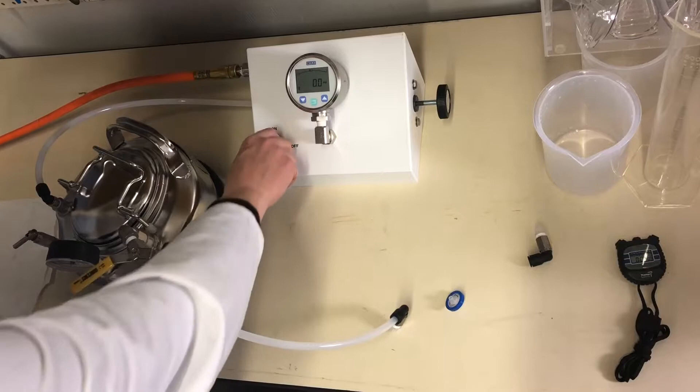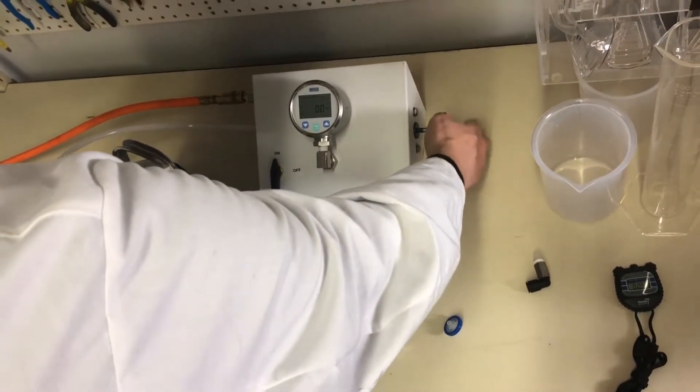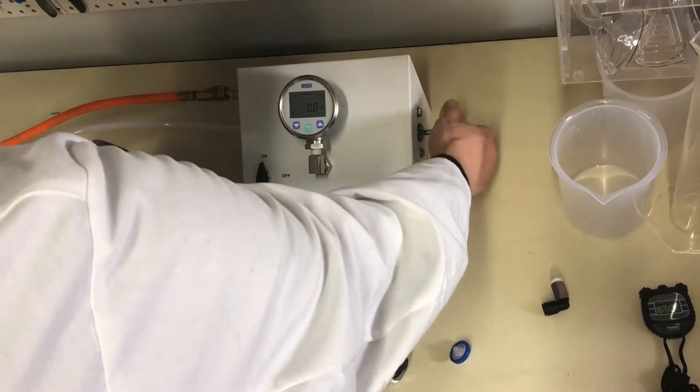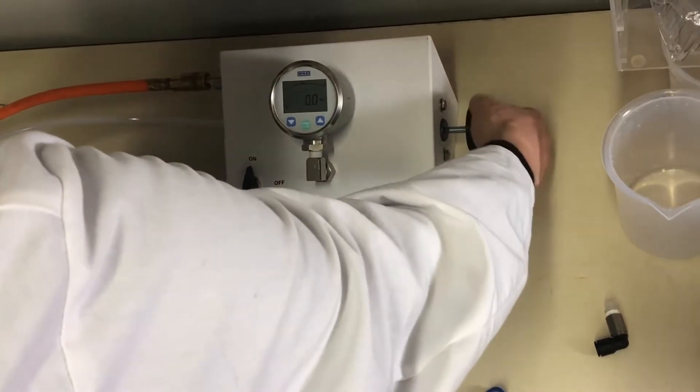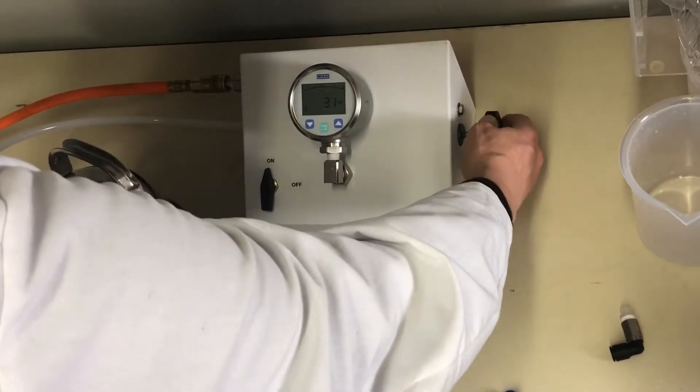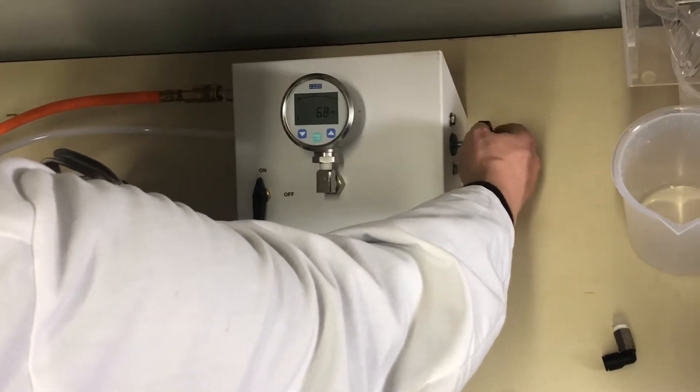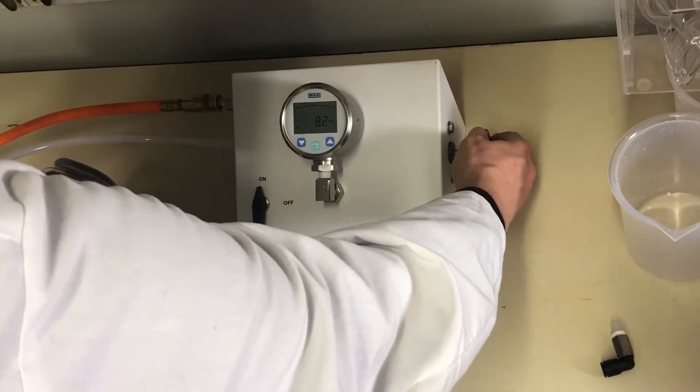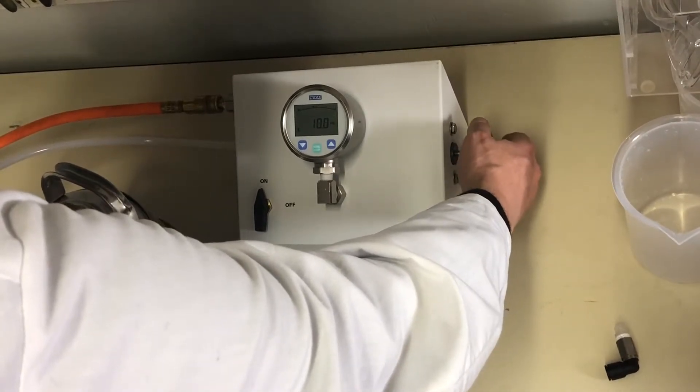Turn the gauge, turn the bubble point tester on, and then adjust the pressure carefully to 10 psi. So now we're pressurizing the pressure vessel.